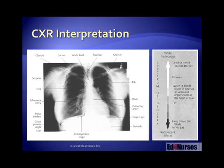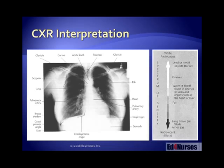A lot of times when we're looking at an x-ray, we get the two confused. So here are some of the things we ought to be looking for on our chest x-ray. Some of the important things are we want to assess the lungs and make sure that the lung is fully expanded, coming all the way down to the diaphragm. The lungs are the dark areas on that x-ray.